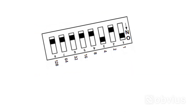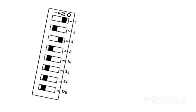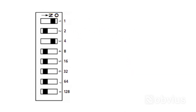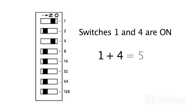The Modbus Address is determined by adding the binary numbers corresponding to the switches in the ON position. In this example, a Modbus Address of 5 has been chosen. This is determined by adding the respective binary numbers for switches 1 and 3, which are in the ON position.